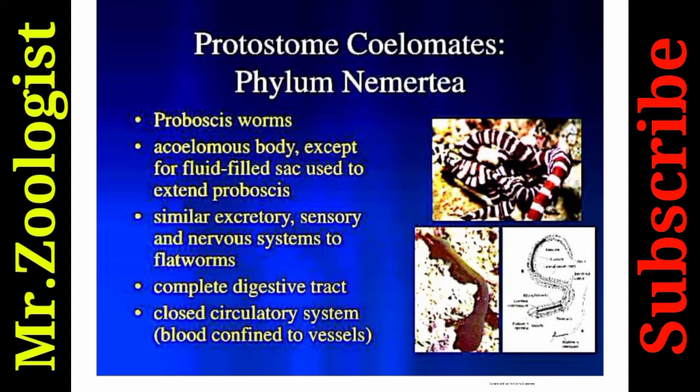Protostome coelomates include Phylum Nemertea — proboscis worms. They are coelomate except for a fluid-filled sac used to extend the proboscis. They have similar excretory, sensory, and nervous systems to flatworms, a complete digestive tract, and a closed circulatory system with blood confined to vessels — capillaries, arteries, and veins.